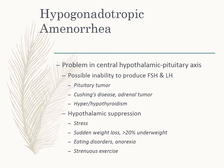Hypogonadotropic amenorrhea is a problem in the central hypothalamic-pituitary axis — a possible inability to produce FSH and LH. It may be a genetic thing, or it could also be a pituitary tumor, Cushing's disease, adrenal tumor, or hyper- or hypothyroidism. Hypothalamic suppression can be from stress, or sudden weight loss where the patient is now greater than 20% underweight. Then we're going to start thinking about an eating disorder — do they have anorexia? We're going to look at how they exercise — are they into dance and gymnastics?